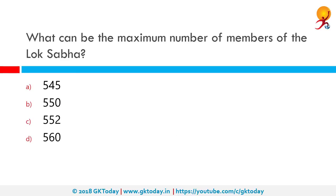What can be the maximum number of members of the Lok Sabha? Lok Sabha is the lower house of Parliament which represents the people. Article 81 deals with the composition of the Lok Sabha, and the maximum strength is 552 members. Of these, 530 are elected from states, 20 are elected from Union territories, and 2 are nominated by the President from the Anglo-Indian community if the President thinks the community is not adequately represented.